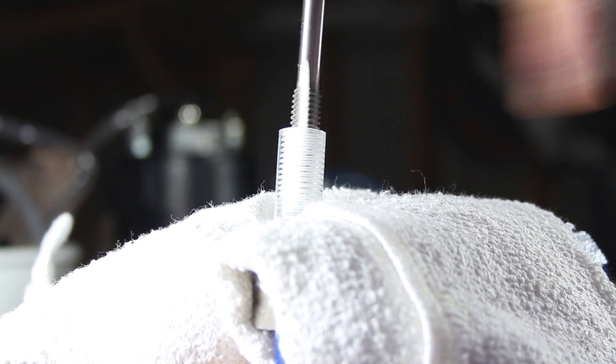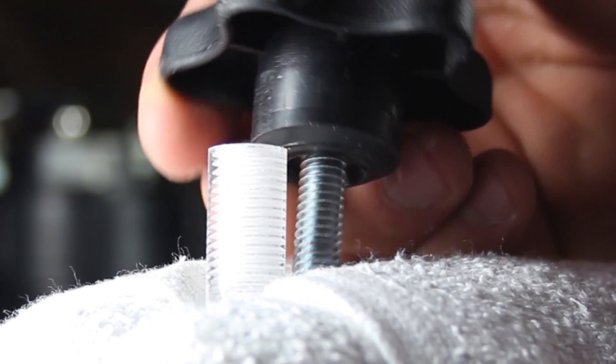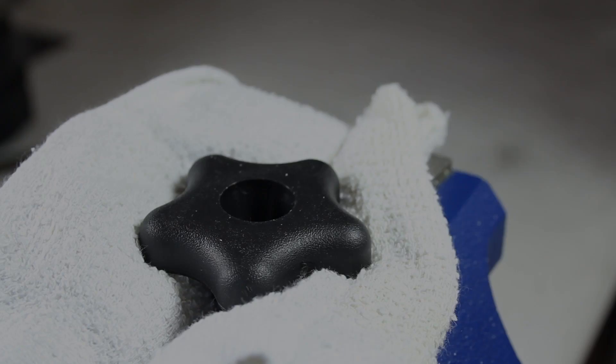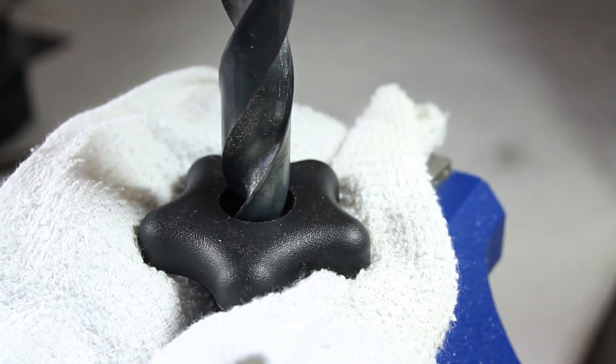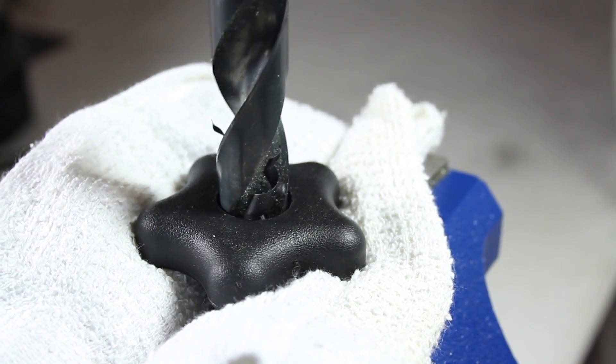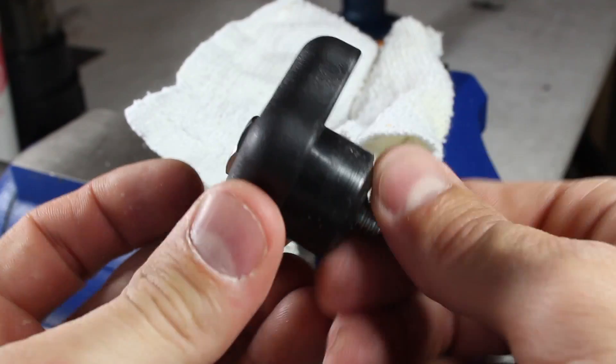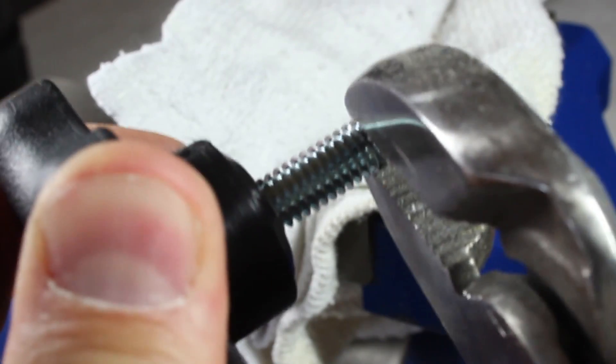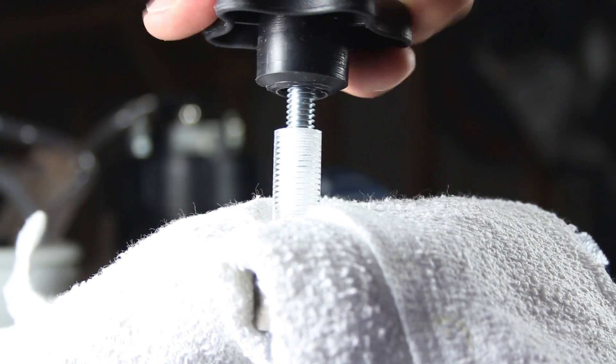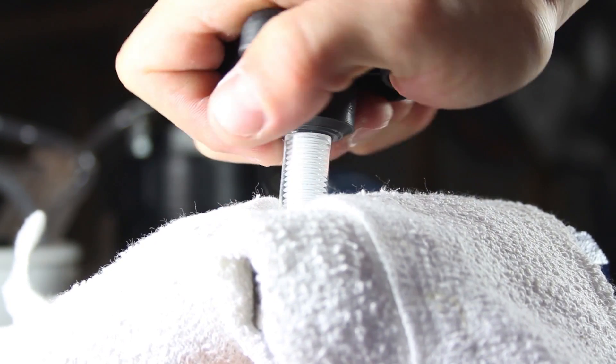This is a 5/16ths coarse thread tap, and I'm using it because it matches the threads on this bolt. To make this handle, I carefully used my vise and a half inch drill bit to hollow out the center, which made a large cavity that I'll be using later. I threaded this hex bolt all the way in and then secured it tightly using a pair of pliers. You can see the handle and the rod thread perfectly together and will just need to be tightened by hand.